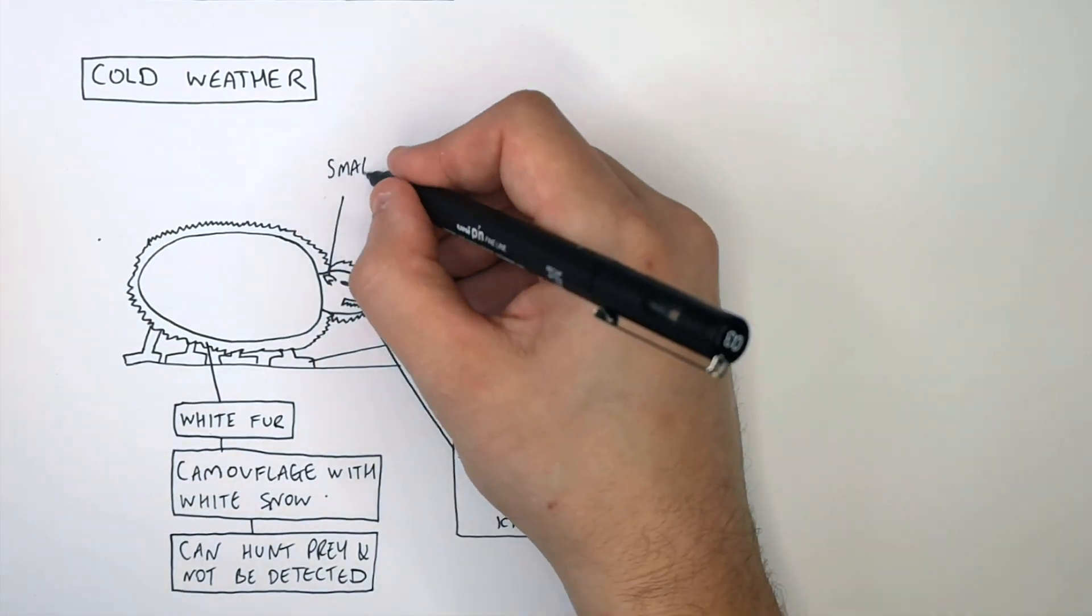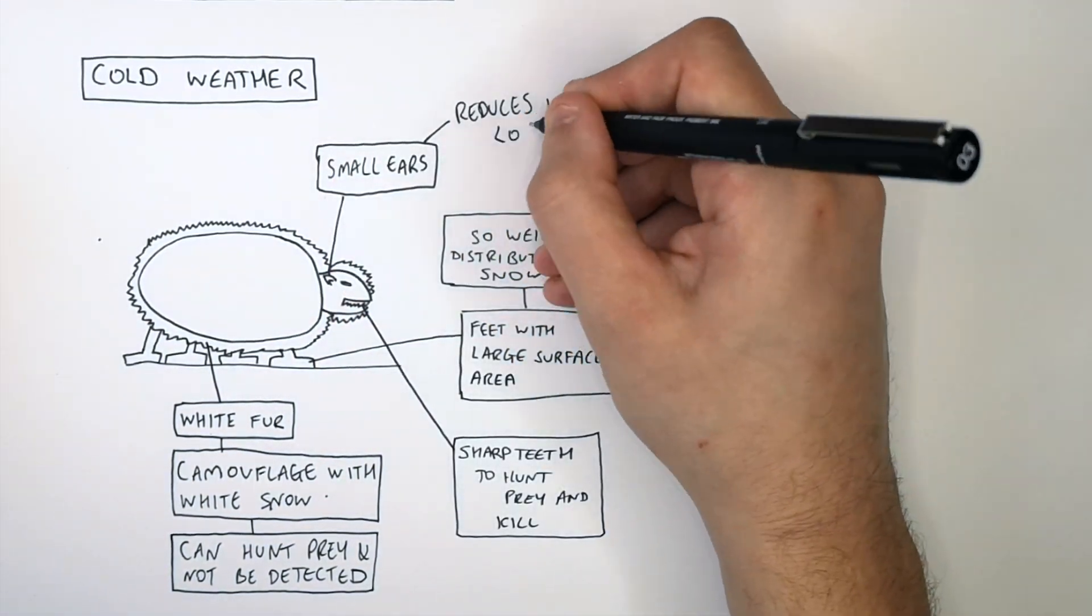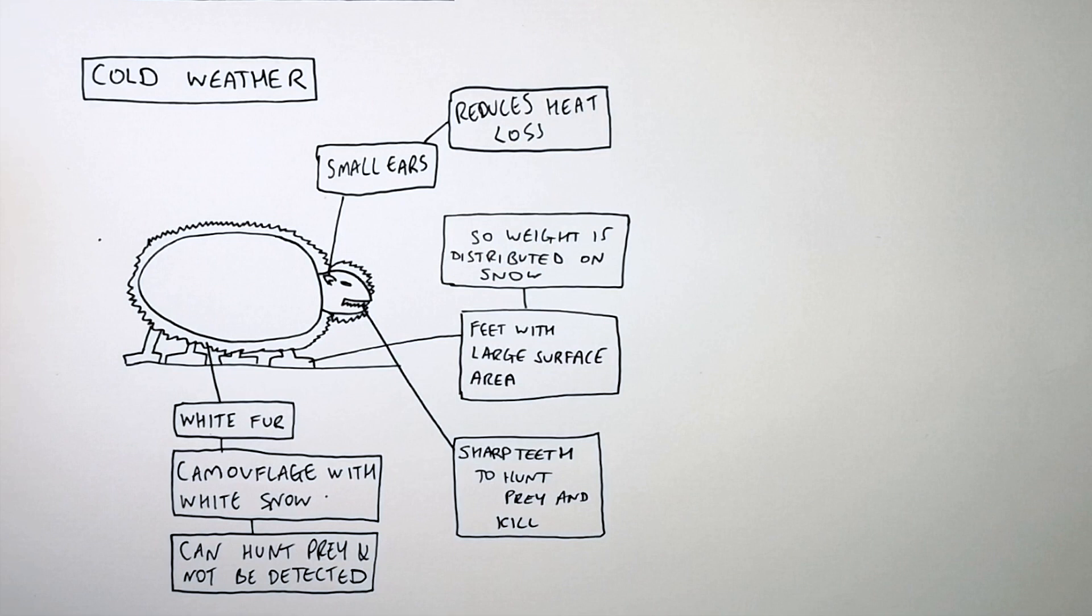Polar bears have very small ears. This is to reduce heat loss. Their ears have a small surface area to volume ratio. That means that less heat is lost into the atmosphere through their ears.